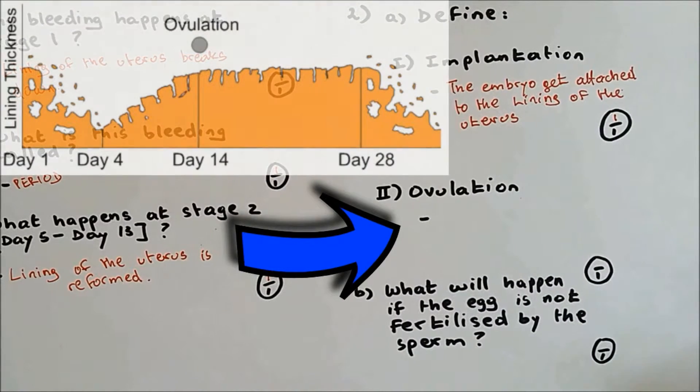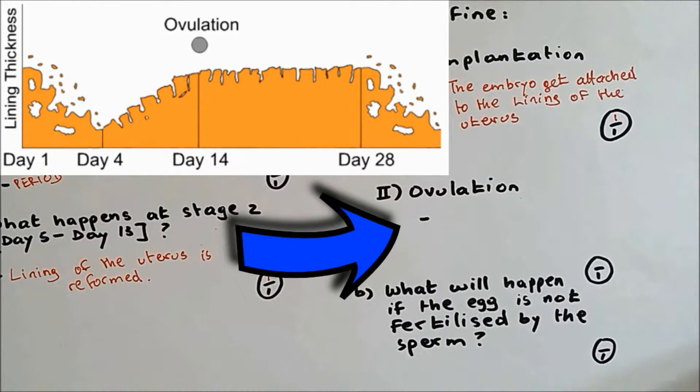Define ovulation. Ovulation is when the egg is released from the ovary at day fourteen.